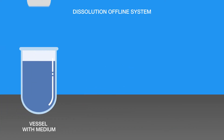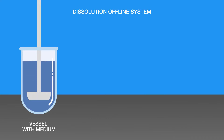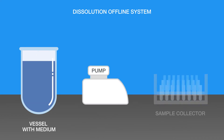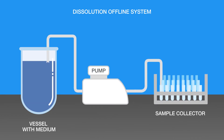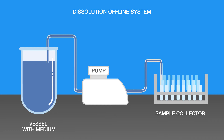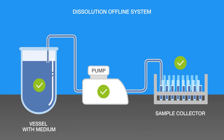An offline system means that samples from the dissolution test are stored for later offline analysis. The analytic devices are not directly connected to the dissolution tester. The samples are stored in small vials in order to be analyzed at some point in the future, often in other laboratories.